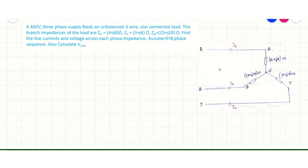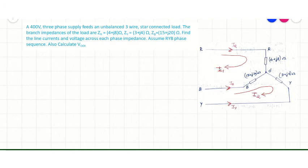The first step is to draw the diagram as per the given question. The diagram is drawn with the given parameters, and the line currents IR, IY and IB are also marked. Now we have to analyze the circuit. For that, two meshes are identified, with mesh current I1 for mesh 1 and mesh current I2 for loop 2 marked accordingly.